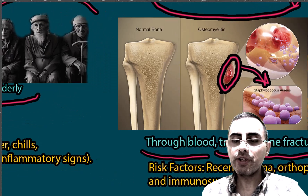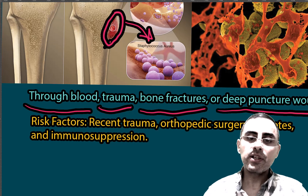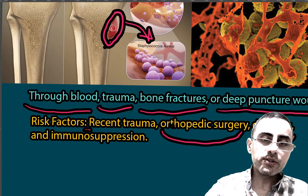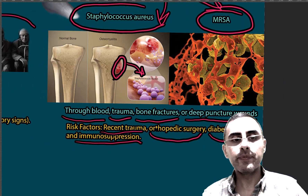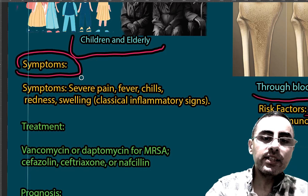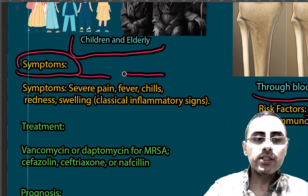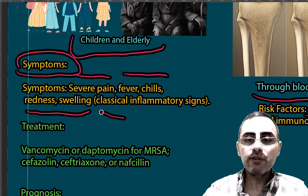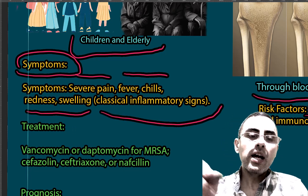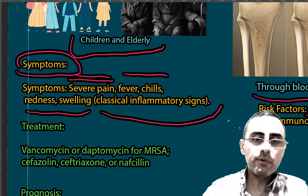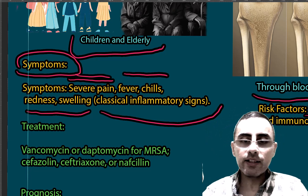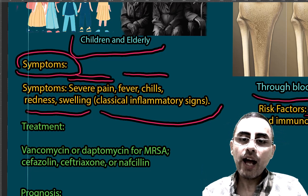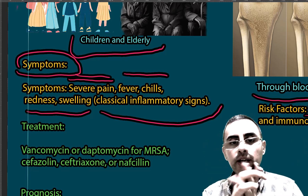It also commonly affects immunosuppressed people, such as those with diabetes or on immunosuppression therapy. Risk factors include orthopedic surgery, diabetes, recent trauma, and immunosuppression. Symptoms include severe pain, fever, chills, redness, and swelling of the affected area — these are classical inflammatory signs — with severe pain being the dominant symptom.